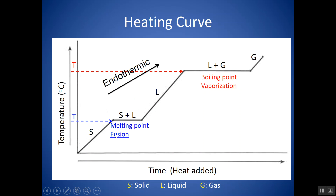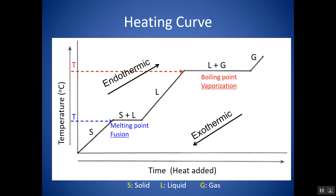All the phase changes associated with going up this graph — solid to liquid, liquid to gas — are endothermic phase changes, meaning energy is absorbed. It makes sense: if you're boiling a pot of water on the stove, you're adding heat to change it from liquid to gas. Any phase changes involving phases going down this curve would be exothermic, meaning energy is released. So going from gas to liquid or liquid to solid releases energy. Going up overall is endo — solid to gas, solid to liquid, liquid to gas. Going down is exo — gas to liquid, liquid to solid, gas to solid.